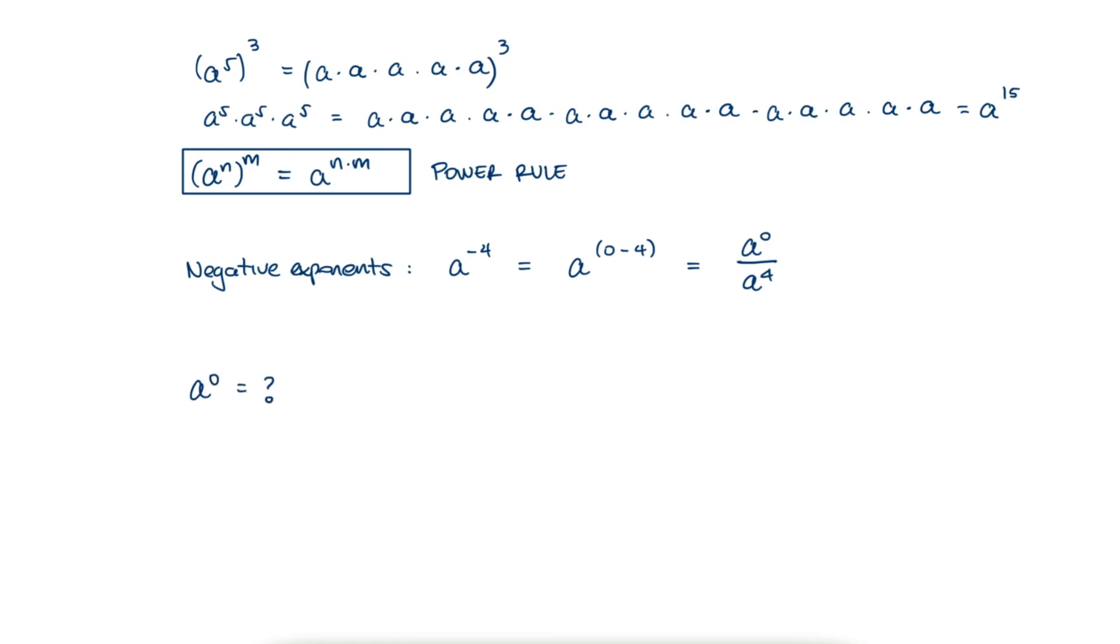We can use the quotient rule for that as well. A to the zero can be a to the x minus x, which is a to the x over a to the x. And this is just one, therefore a to the zero is just one.